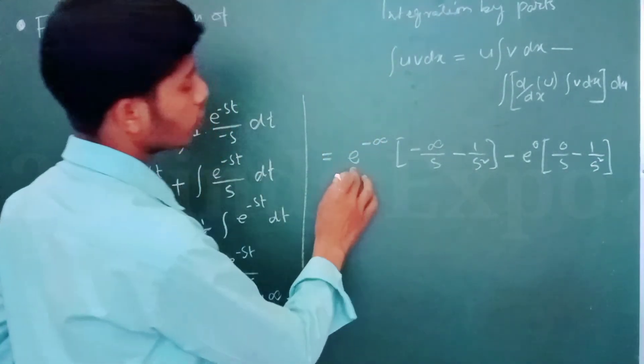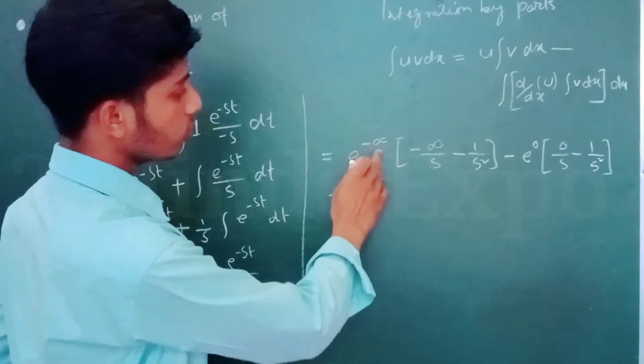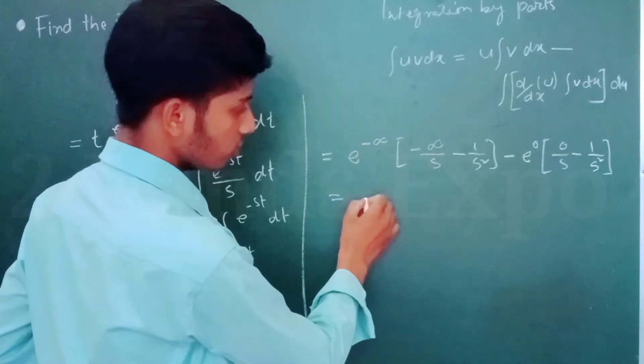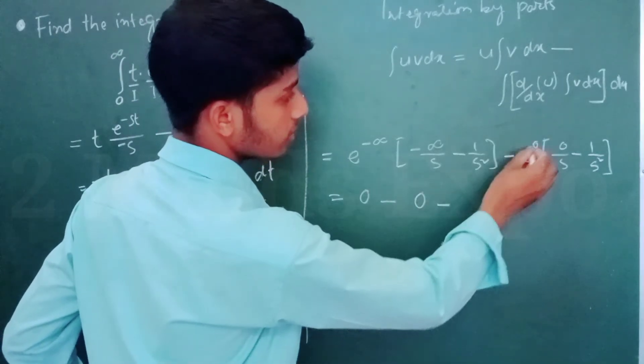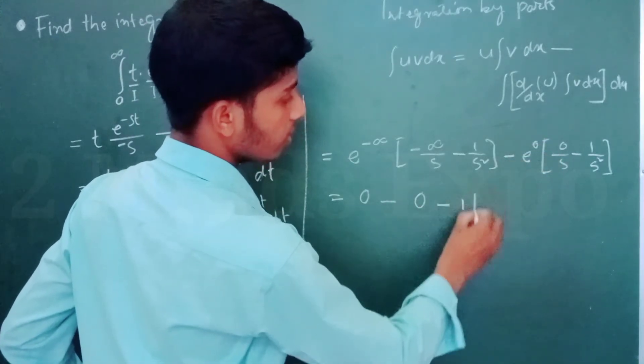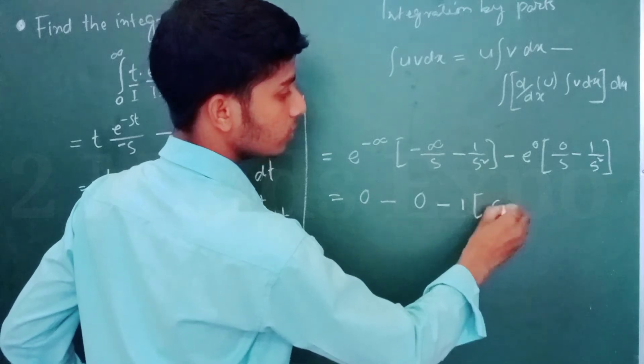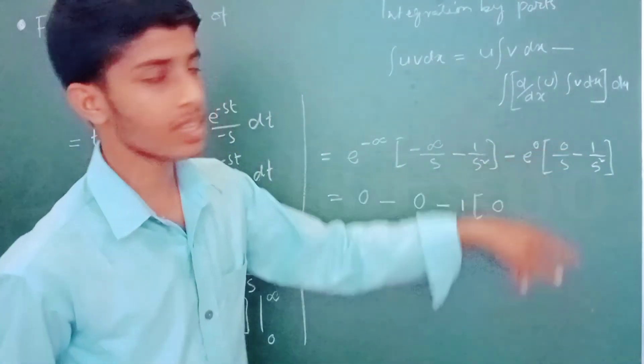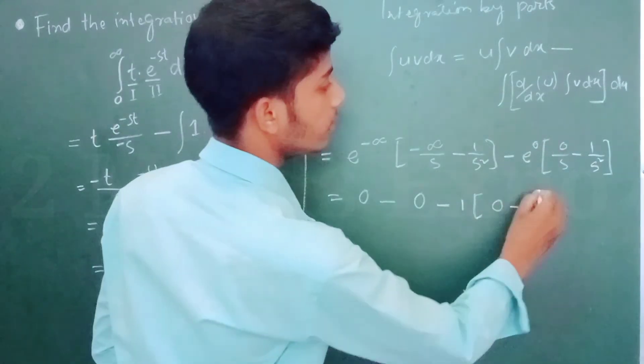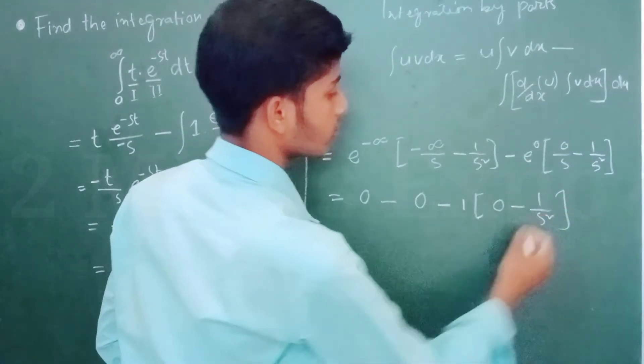We can write e to the power minus infinity, I mean 0. 0 into something is 0, minus 0 minus, this is 1, and 0, 0 something, 0 by something means 0, and 1 by S square.